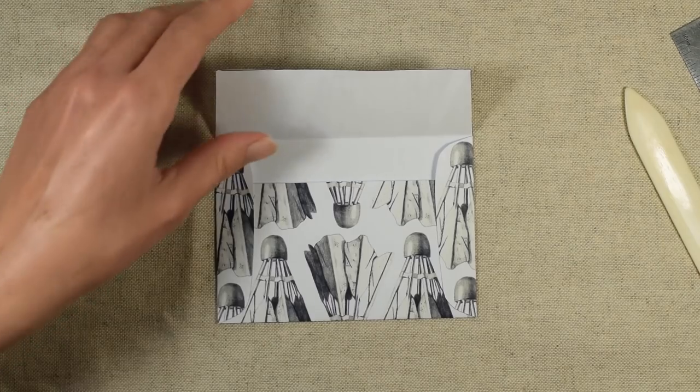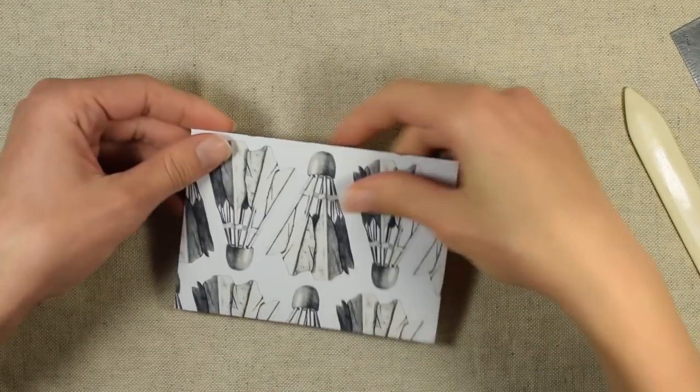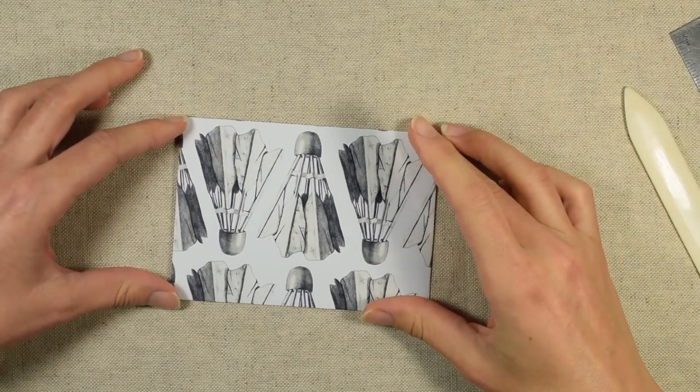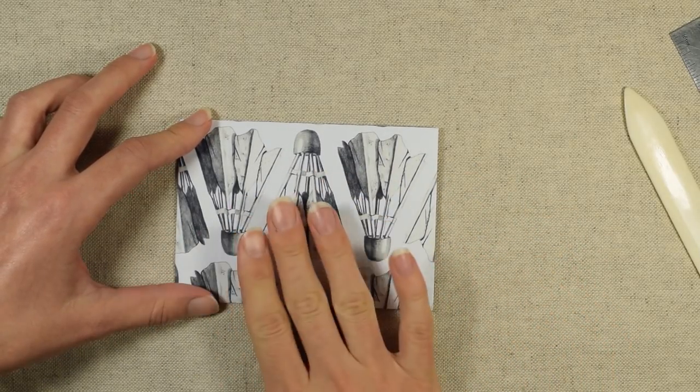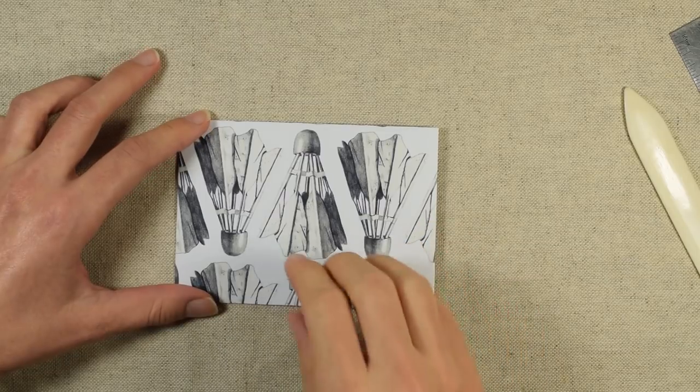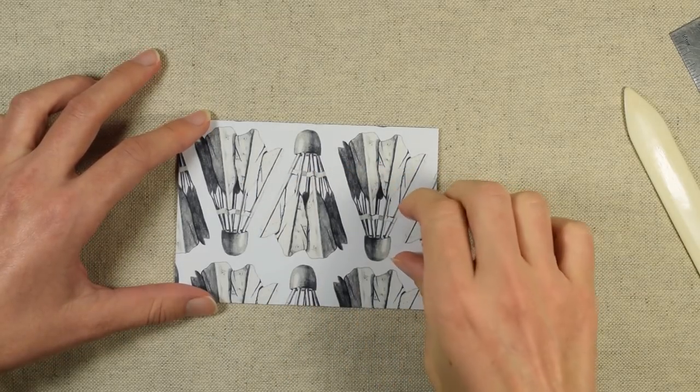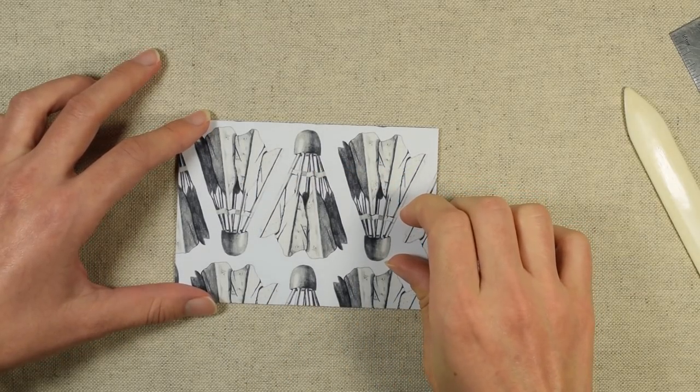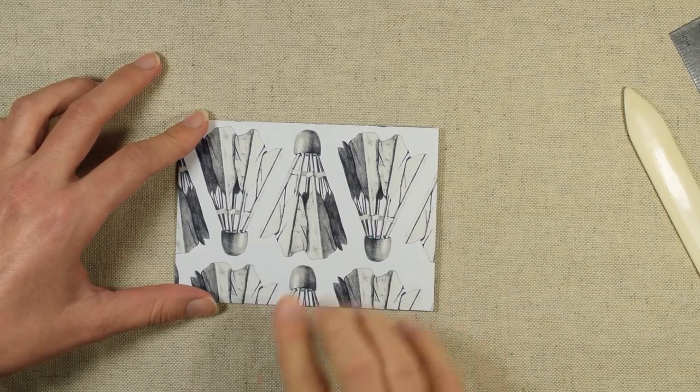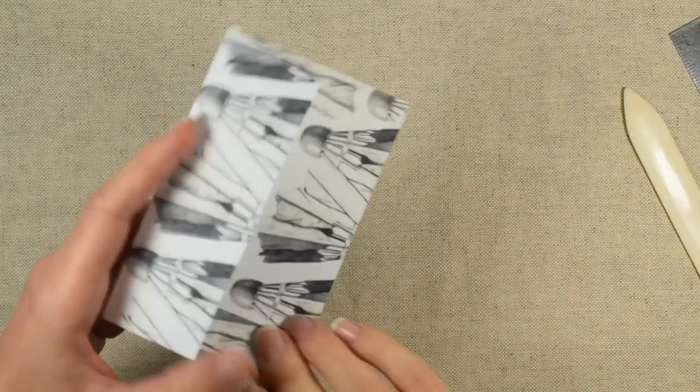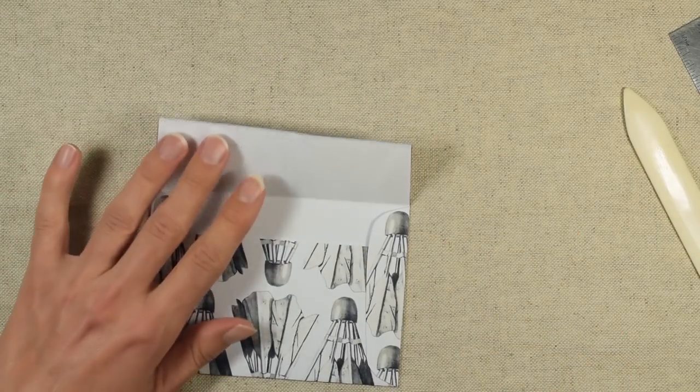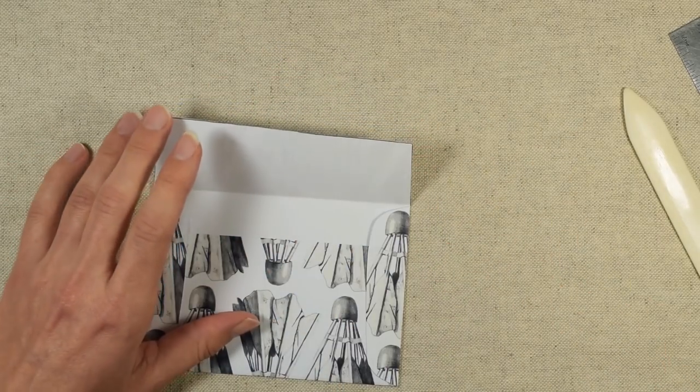And then what you're going to do is address the envelope. With this kind of envelope, we probably won't be able to write directly on it. We're going to have to decoupage another piece of paper with the address on it on top because otherwise, the address will probably get lost in the design. And then once you're done, you'll put everything inside your envelope and glue this flap down.